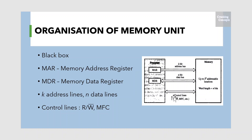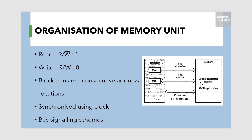Other control lines may be added to indicate the number of bytes to be transferred. The connection between the processor and the memory is as given in the figure. The processor reads data from memory by loading the address of the required memory location into the MAR register and setting the R/W control signal to 1. The memory responds by placing the data from the addressed location onto the data lines and confirms this action by asserting an MFC signal. Upon receipt of the MFC signal, the processor loads the data into the MDR register.